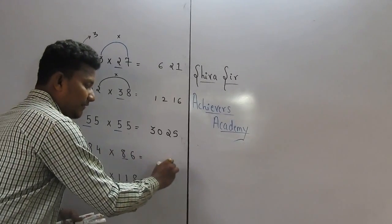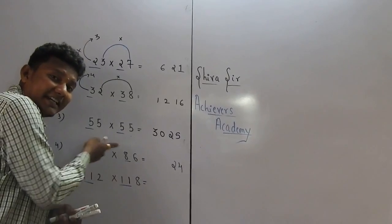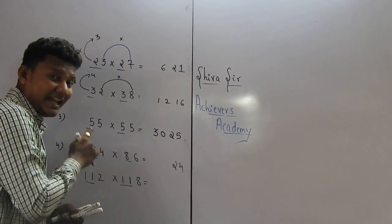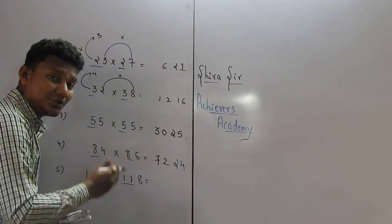Move on to the next example. 4 times 6 is 24. What is the next number after 8? That is 9. So 8 times 9 is 72. So we got our answer: that is 7224.